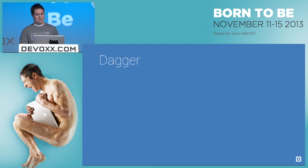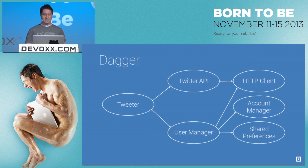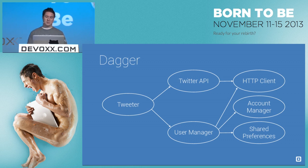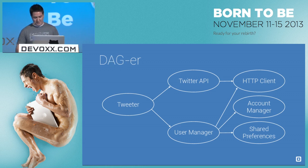A lot of people ask about the Dagger name. The dependency tree in your app might look something like this — it's not actually a tree, it's a graph, and it's a special kind of graph. You'll notice that all of the arrows are pointing in a single direction, which means it's a directed graph. And you'll notice that there are no cycles, so nothing points to itself even transitively, which means it's acyclic. So this is a directed acyclic graph — DAG — and that's where Dagger becomes Dagger.